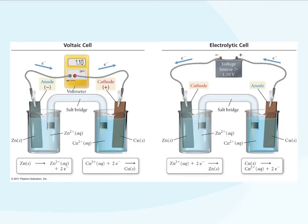When we look at an electrolytic versus a voltaic cell, or a spontaneous reaction, there's really not that much difference in the actual setup. We still see that electrons are flowing from the anode to the cathode — that's the same in an electrolytic cell. We still see oxidation happening at the anode and reduction happening at the cathode for both of them. Nothing changes as far as that part.